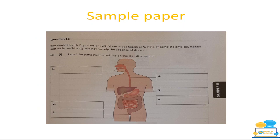Moving on to a sample paper long question (question 12). Part A asks you to label parts one to six in the digestive system diagram. Number one is the mouth — also called the buccal cavity, though most students just say mouth.